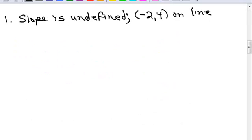So here's the first one. The slope is undefined and (-2, 4) is on the line. There's a couple ways of approaching this problem. One is to go ahead and draw the line. So, we've got (-2, 4) on the line, which is right here and we know the slope is undefined. And here's what I have to remember.